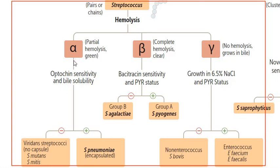In the alpha group, which causes partial hemolysis and a green solution, we check optochin sensitivity and PYR status.